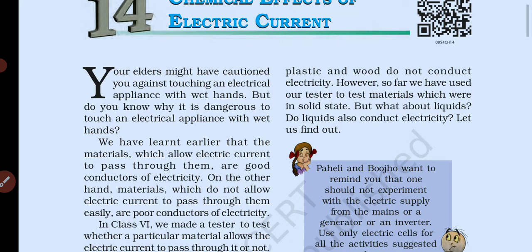Poor conductor of electricity की बात करें तो plastic और इस तरह की चीजें आती हैं जिनसे electricity pass नहीं हो सकती। अगर किसी को electric shock लग रहा हो तो उसे metal से नहीं छूना चाहिए क्योंकि metal से electricity pass होती है। पानी भी electricity को एक जगह से दूसरी जगह pass करने में मदद करता है।